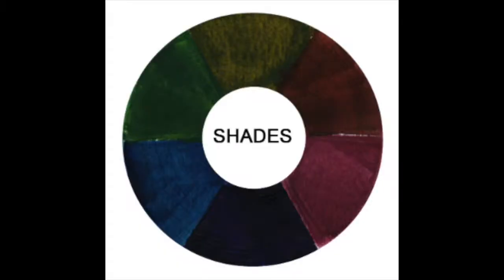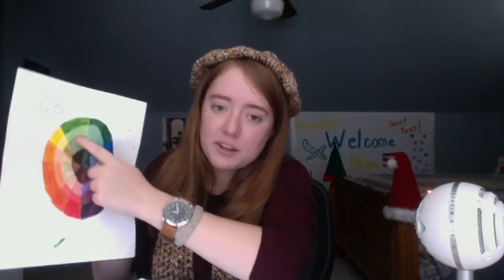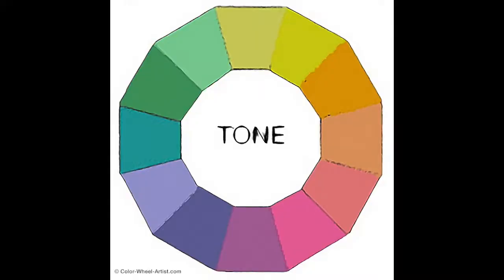Shade is basically a base color mixed with black, so it makes the color look darker. I'll be putting pictures up so you can see exactly what I'm talking about — it's like the base color and then you go down and it's just darker. The next word is tone — it's your base color mixed with gray, and there's a picture for that too.